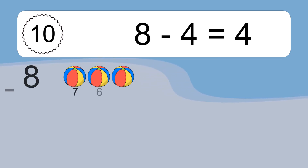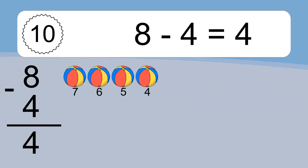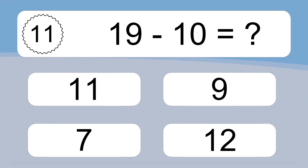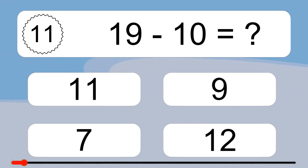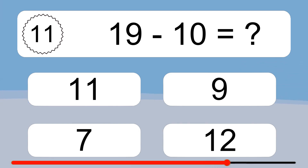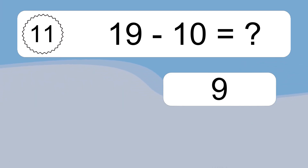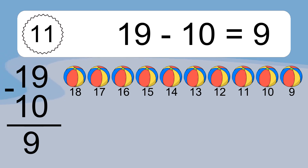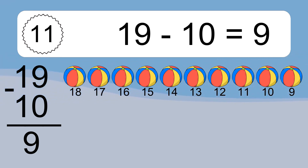8 minus 4 equals what? 8 minus 4 equals 4. Let's count it: 7, 6, 5, 4. 19 minus 10 equals what? 19 minus 10 equals 9. Let's count it: 18, 17, 16, 15, 14, 13, 12, 11, 10, 9.